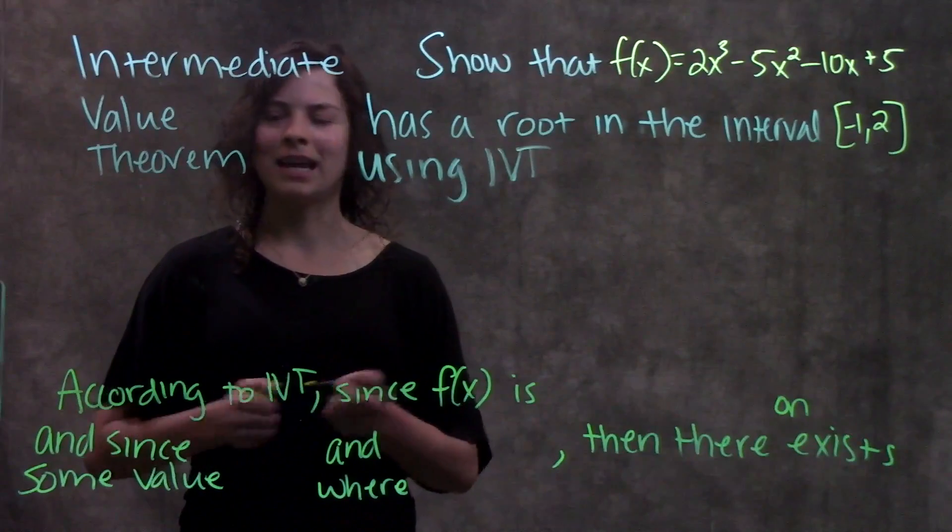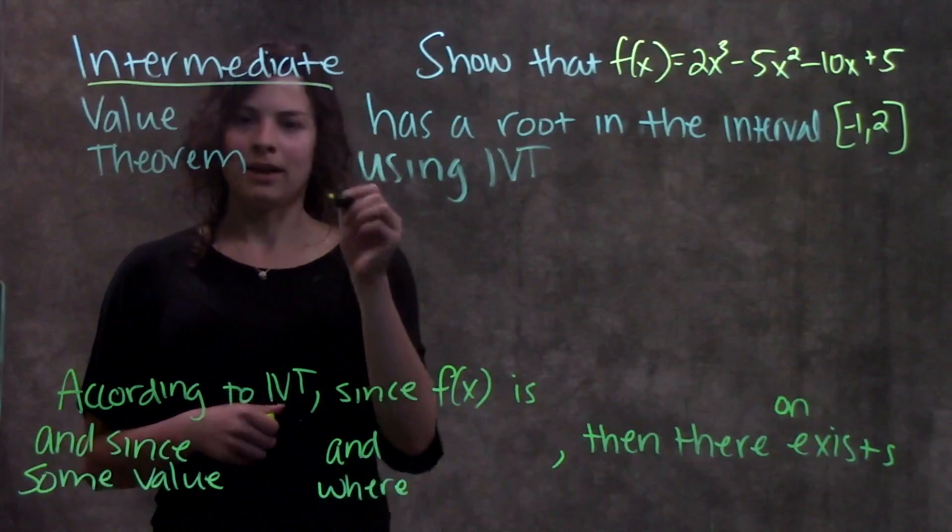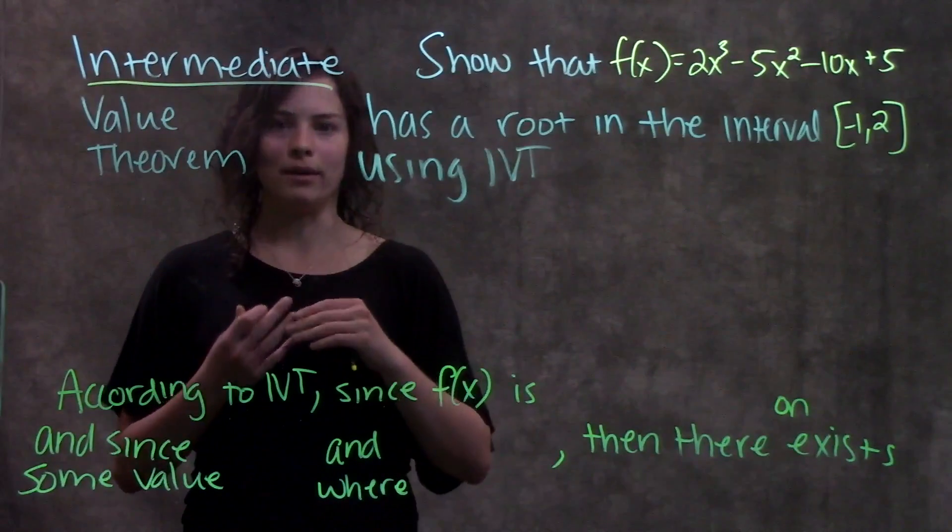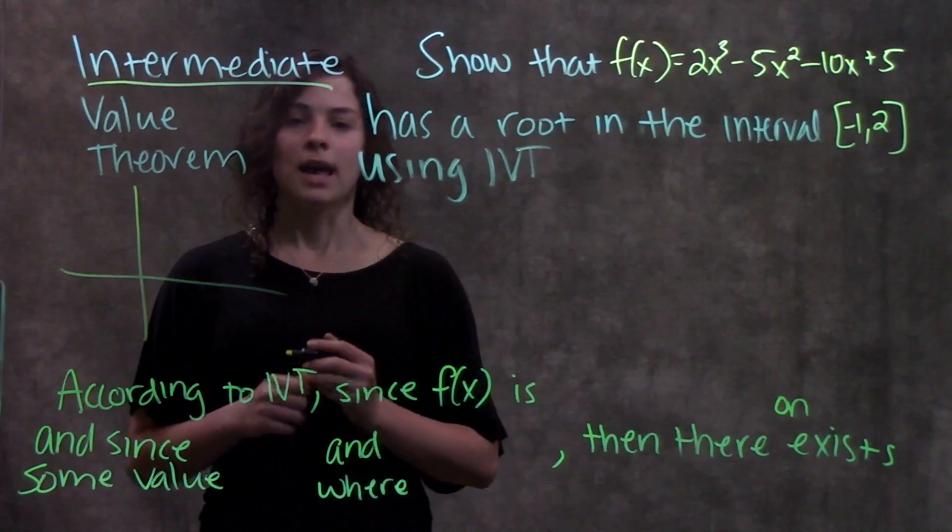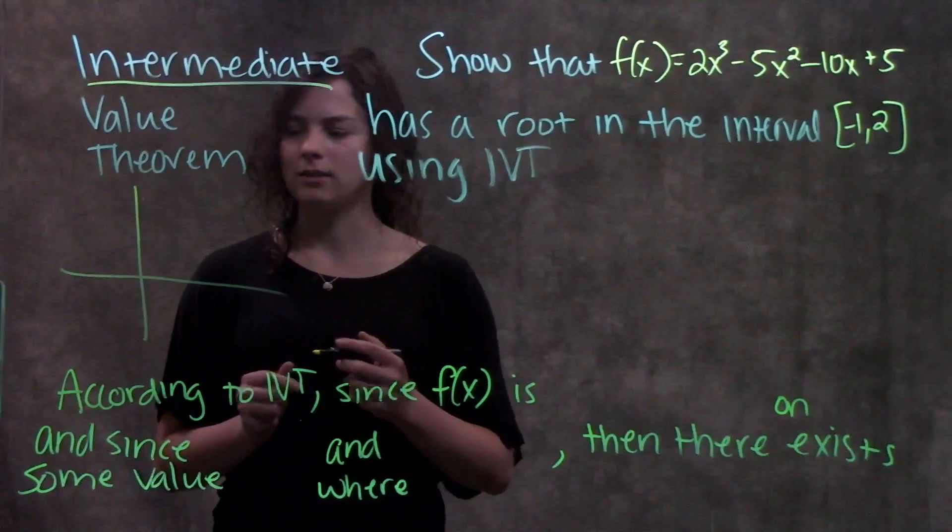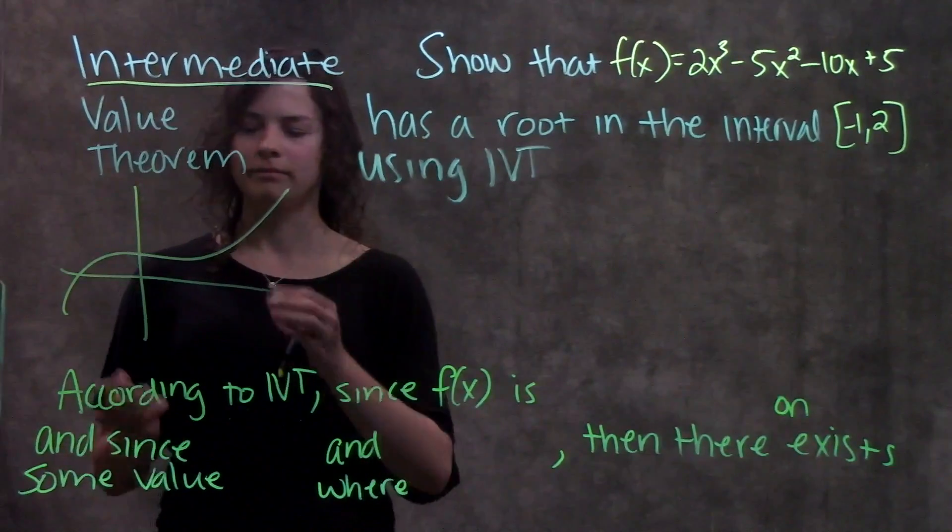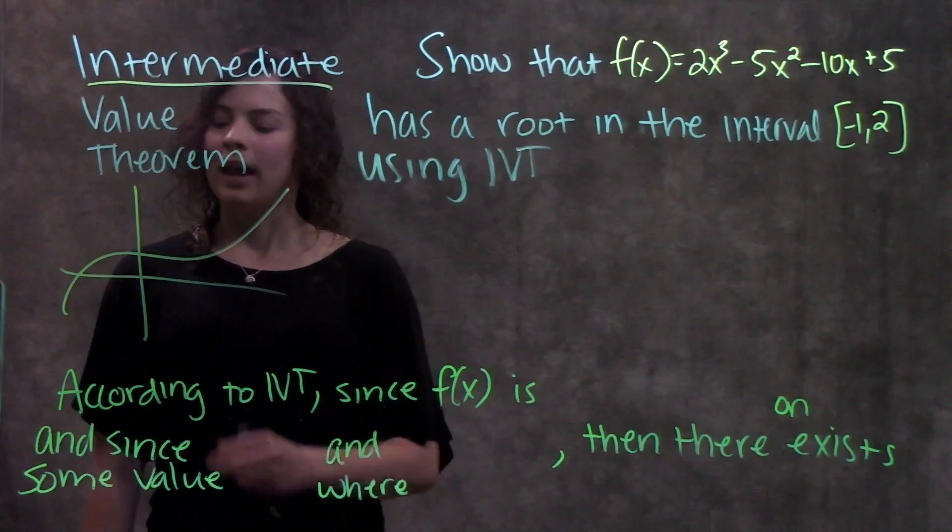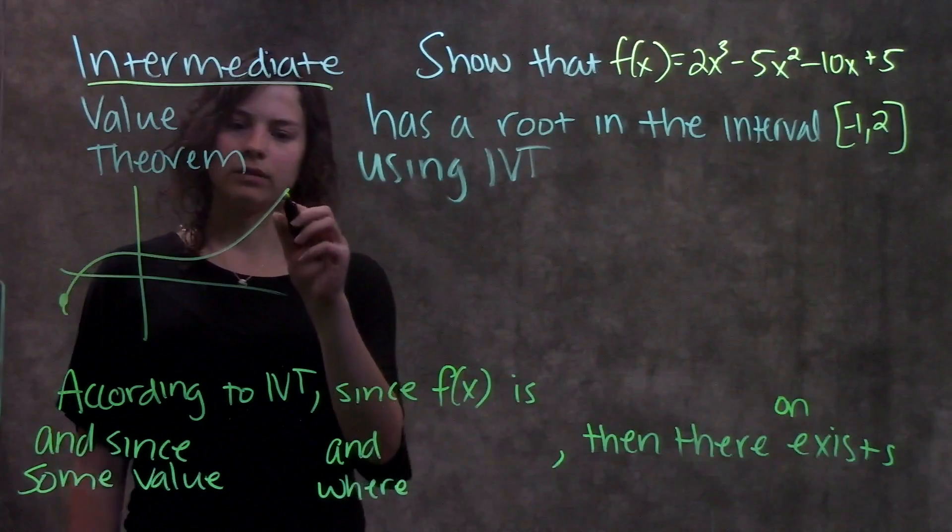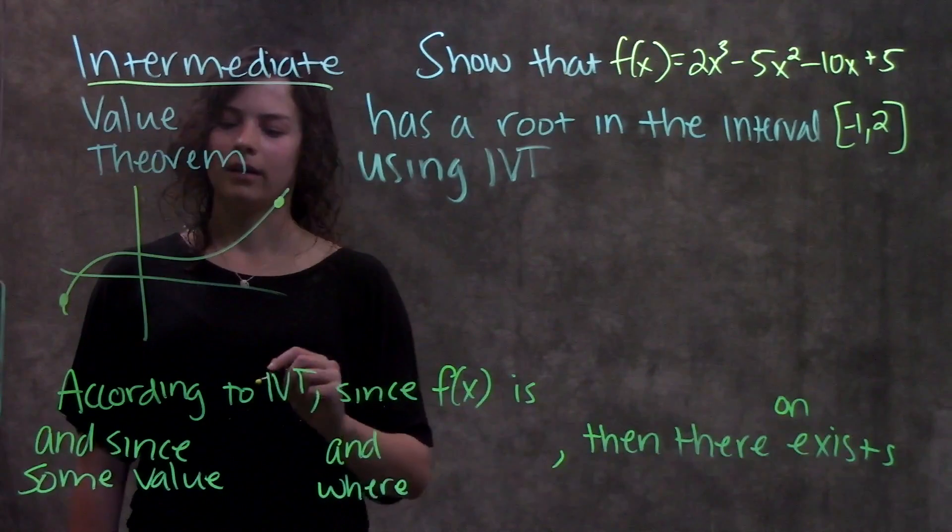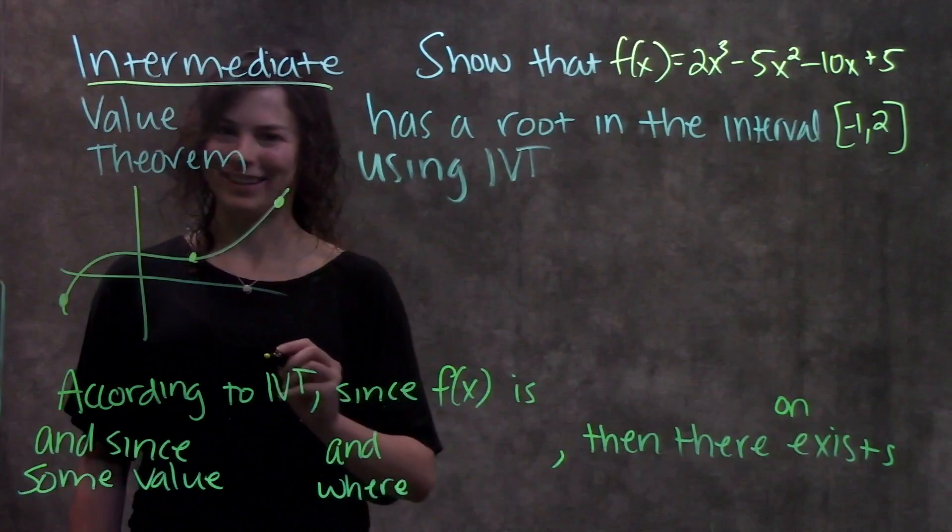Intermediate Value Theorem, it says it in the name. It's interested in the intermediate value, or some value in the middle. What Intermediate Value Theorem says is that if we have a function that's continuous, that's the first point, it has to be continuous like this, and there's some value down here and later some value up here, then there must be some value in the middle that's here.